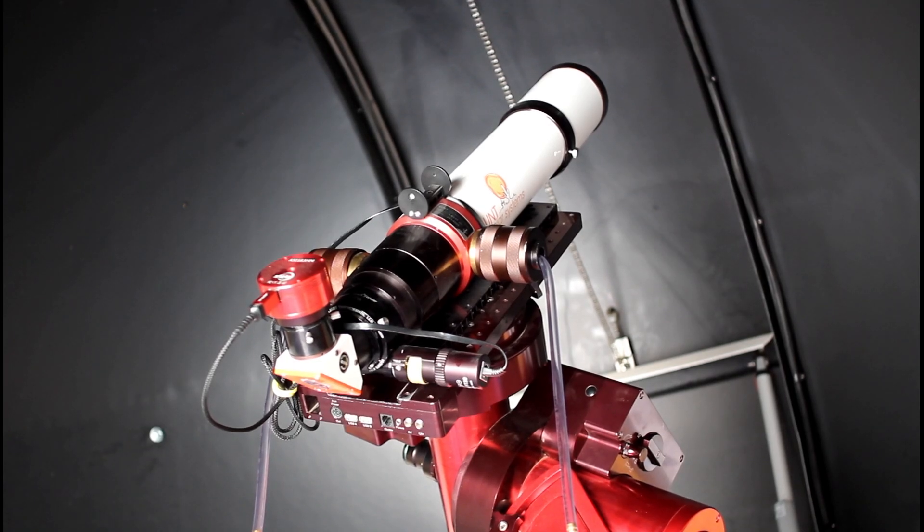Here is the Lunt double-stack solar telescope modified for remote pressure tuning. Each of the two pressure tuner knobs has been modified to replace the original plunger with one that allows pressure to be supplied from the outside from an external source.